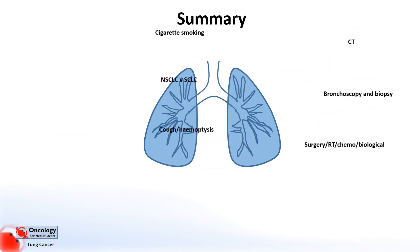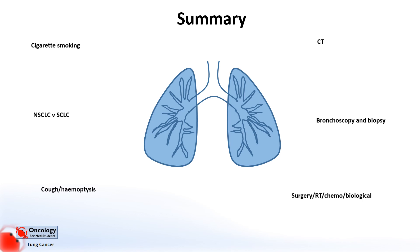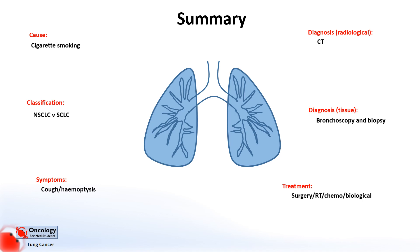In summary, lung cancers are very common and they're the most common cause of cancer-related death. The vast majority of cases are related to cigarette smoking. They can be divided into two types: non-small cell lung cancers and small cell lung cancers. They often present with a prolonged cough or haemoptysis, and are diagnosed with imaging including a chest x-ray and CT scan. Tissue diagnosis is usually via bronchoscopy and biopsy, and treatment options include surgery, radiotherapy, and chemotherapy — with the choice varying with the histological type and stage of the tumour. I'm planning more videos on lung cancer covering staging, lung cancer syndromes, and treatment in more detail. Thanks for listening — your questions and feedback are more than welcome, and please subscribe to the channel for more videos.